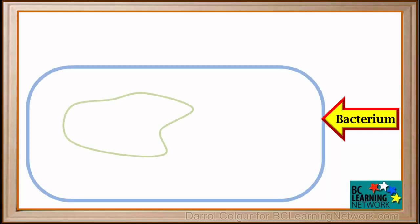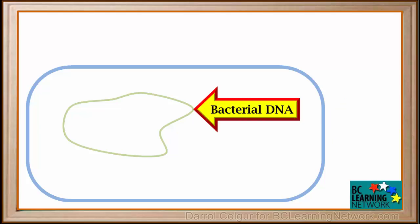Here is a simplified diagram of a bacterium, a single-celled organism that is much larger than a virus. The green circle represents the DNA of this bacterium. In bacteria, DNA is not contained within a nuclear membrane. The DNA is normally used to instruct this cell how to make proteins.